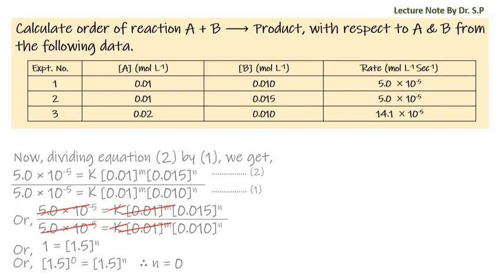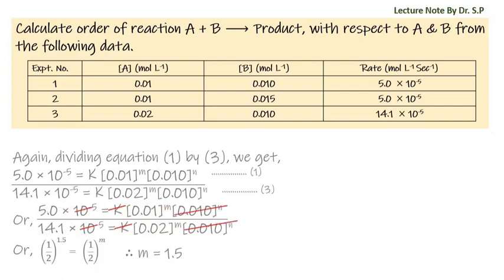By using the law of indices — anything to the power 0 equals 1 — we get the value of n = 0. Since n is the order of reaction with respect to B, the order of reaction with respect to B is 0. Now dividing equation 1 by equation 3.